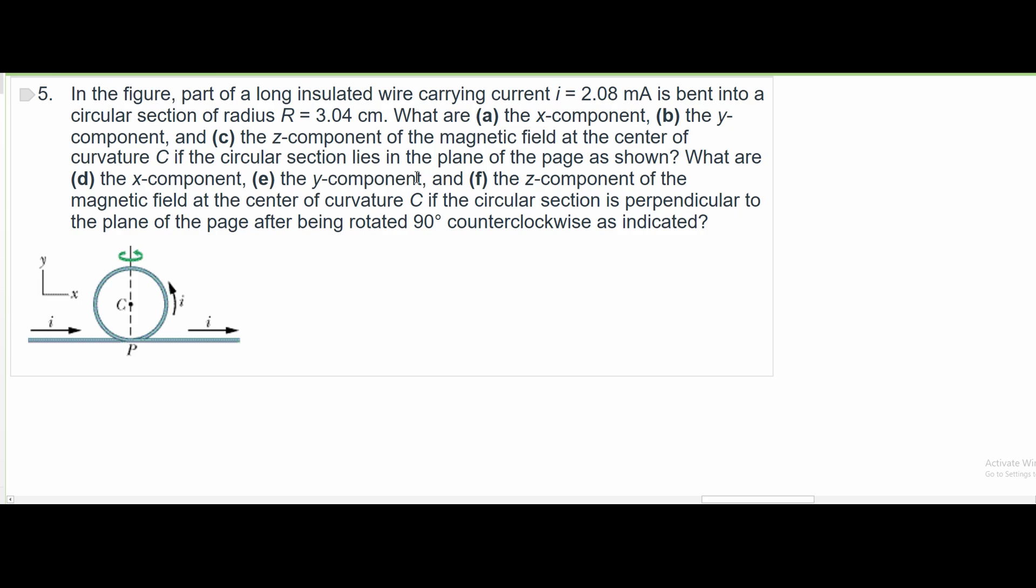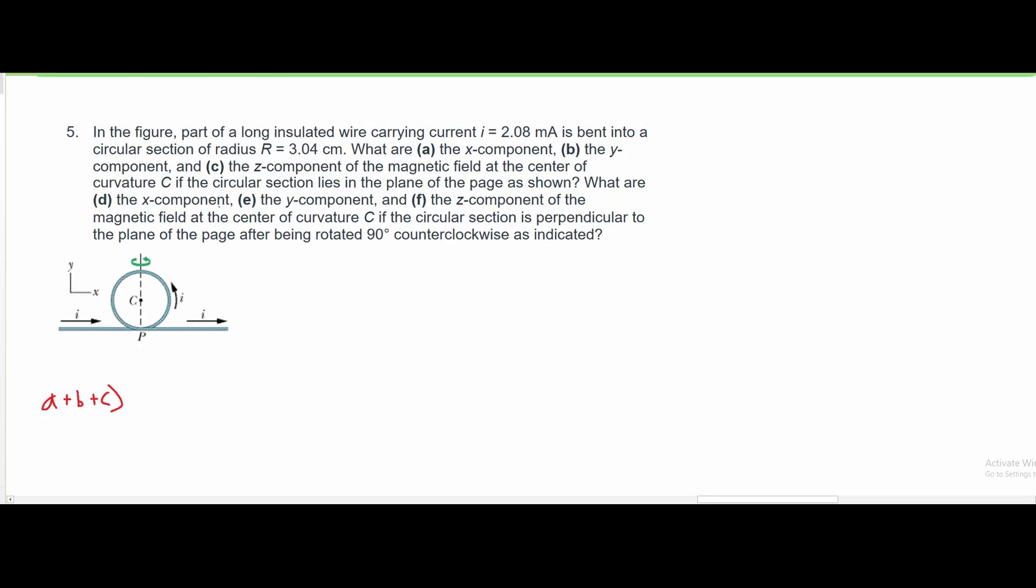For a, b, and c, we're going to do these all together. When we look at this, we are going to find the components of the magnetic field at the center. So we're finding the magnetic field in here at C.